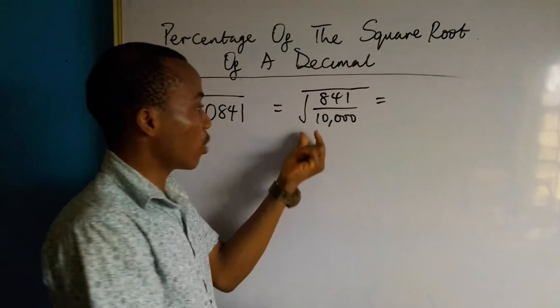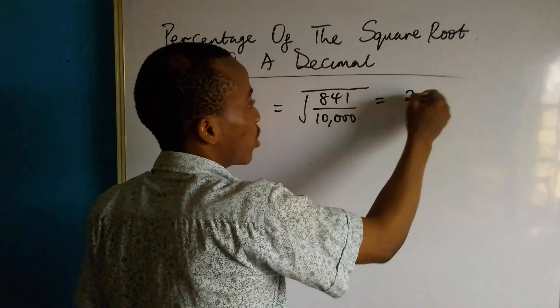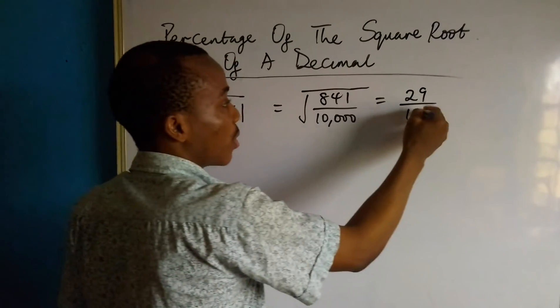Let's take the square root to get rid of the root sign. This will be 29 over square root of 10,000, which is 100.